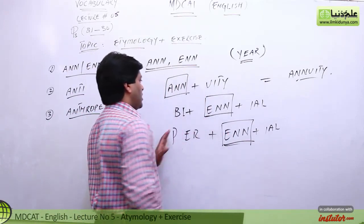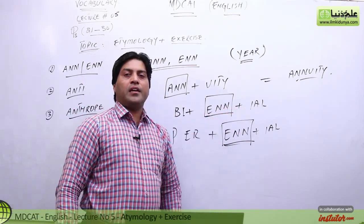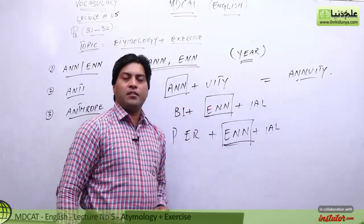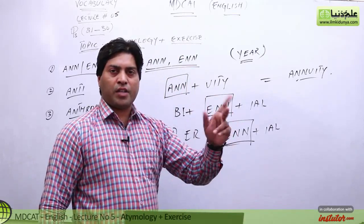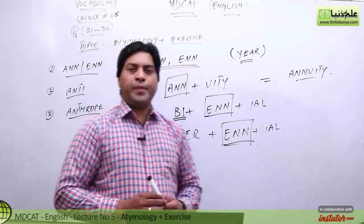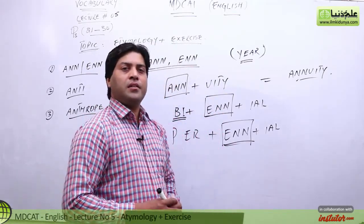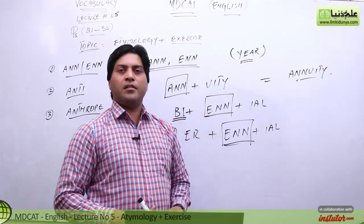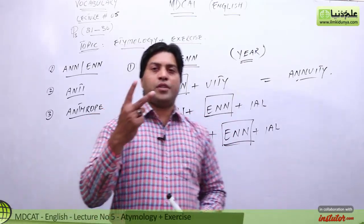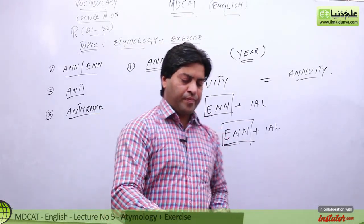The next word is biennial. Pyare bachcho, biennial — BI-ENNIAL. Pronunciation do tarah se hai: biennial ya biennial. Jis lafz ke shuru mein BI ya BIO ajaye — jaise biology, bypass — BI is used in the sense of 'two'. To biennial ka matlab kya hoga? Biennial means every two years.